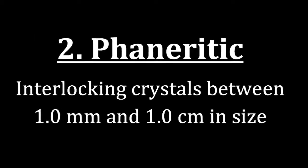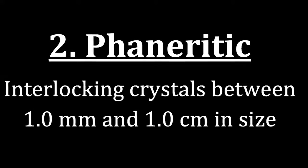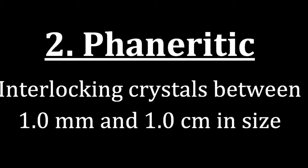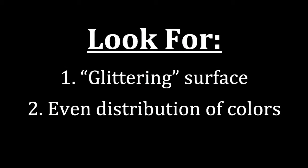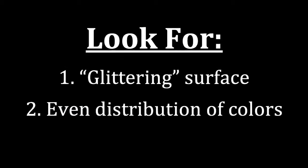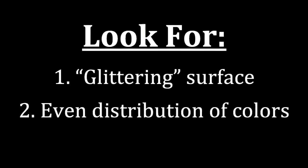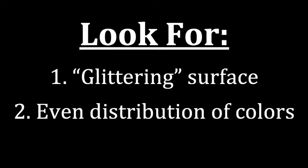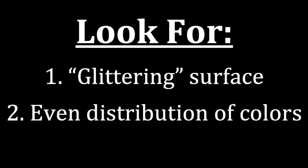The second texture is phaneritic. Here we're looking at interlocking crystals between one millimeter and one centimeter in size, meaning all of the crystals that make up the rock are large enough to see with the naked eye, versus the pegmatitic texture that had very large crystals. When we look at phaneritic rocks, we're going to look for two things: glittering — light shining off the surface of the mineral — and an even distribution of colors looking at the crystals of the rock.